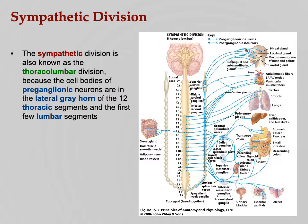The sympathetic division, also known as thoracolumbar, gets that name because the cell bodies of the pre-ganglionic neurons are in the lateral gray horn of the 12 thoracic segments and first few lumbar segments — T1 through L3. In the somatic nervous system, the cell bodies were in the ventral gray horn; now they're in the lateral gray horn.